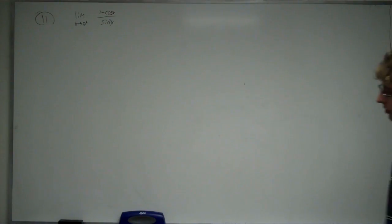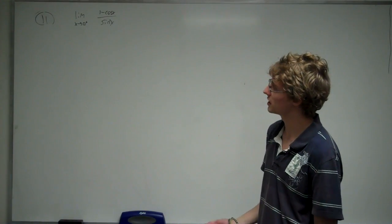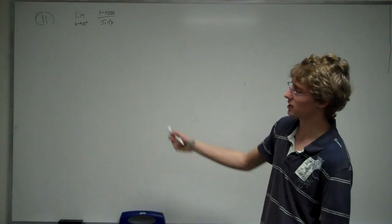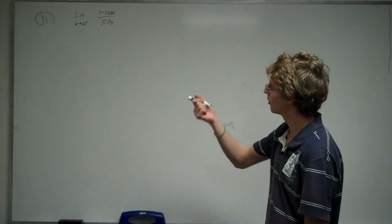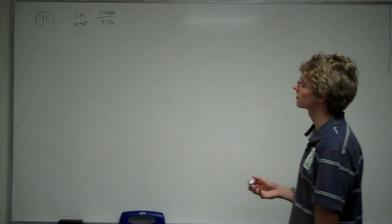Alright, this is problem 11 on Example Form Code A, and the problem reads: evaluate the limit as x approaches 0 from the right of 1 minus cosine x divided by sine squared of x.